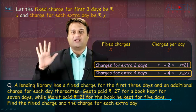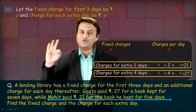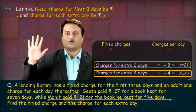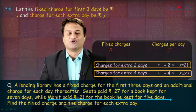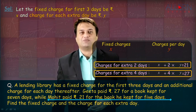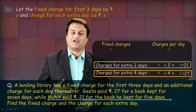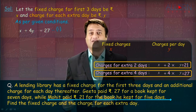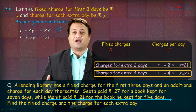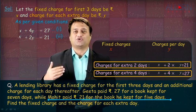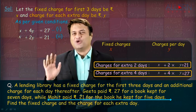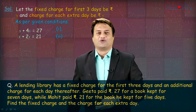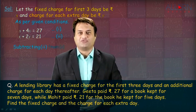Mohit kept the book for 5 days — out of 5, 3 are fixed, so the extra charge is only for 2 days. So the second equation is X plus 2Y equals 21. So the first equation is X plus 4Y equals 27, and the second equation is X plus 2Y equals 21. Two very simple equations. Let us solve by the method of elimination by equating the coefficients.